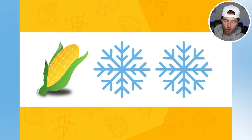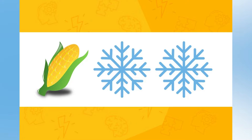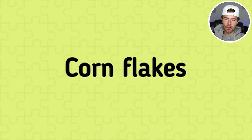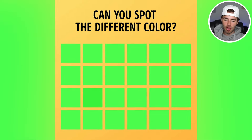We've got corn and we have some snowflakes. Put these together and try to guess what these two words or emojis combined equal. So we've got corn and snowflakes — therefore, we've got cornflakes! Did you guys get cornflakes? Comment down below.